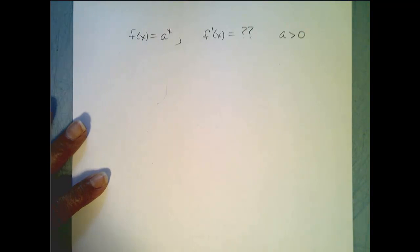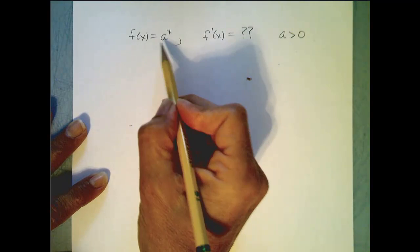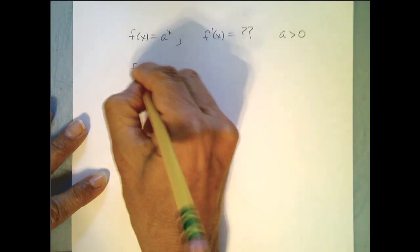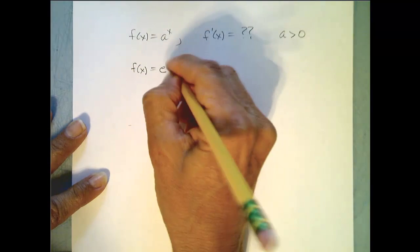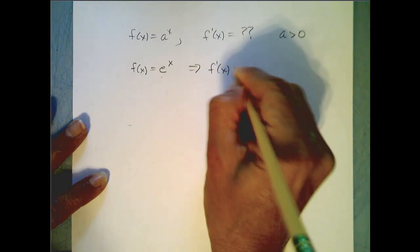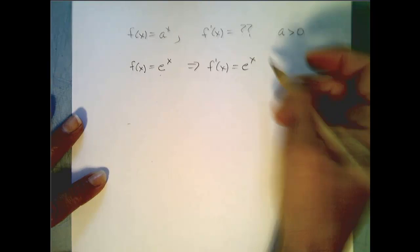We are now ready to answer the question about what the derivative is for a to the x for a bigger than zero. We looked at a special case when our a was e, and we discovered that its derivative is itself, but it was the only a value that had this property.